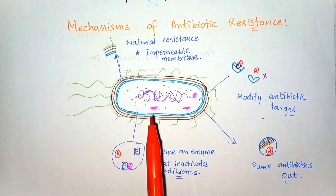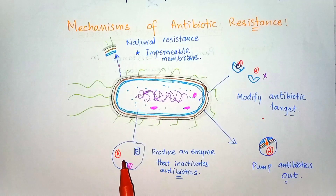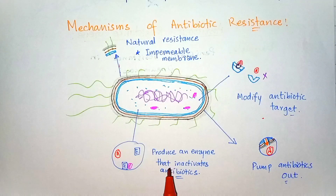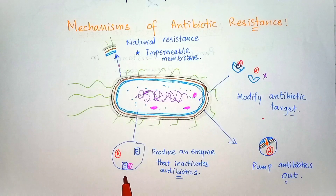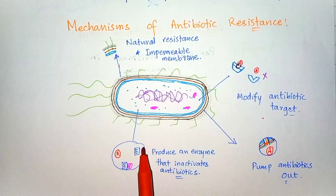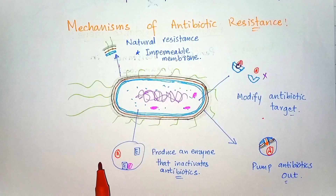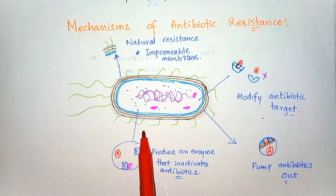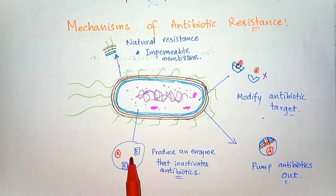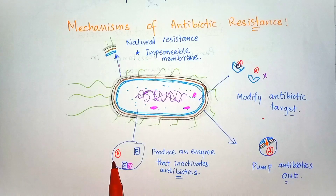Other bacteria are capable of producing enzymes that can inactivate the antibiotics upon contact. These enzymes are produced by the bacterial cell, and when the antibiotic attacks the bacterial cell, these enzymes inactivate the antibiotic so it has no effect on the bacterial cell.